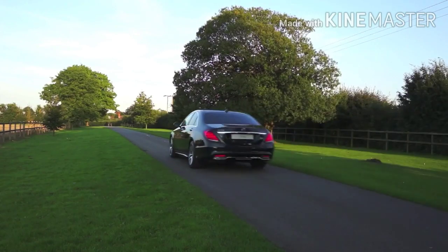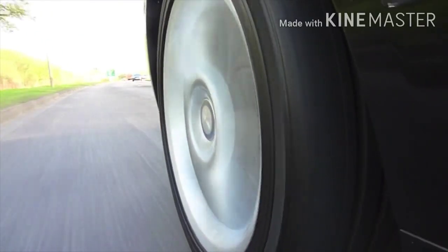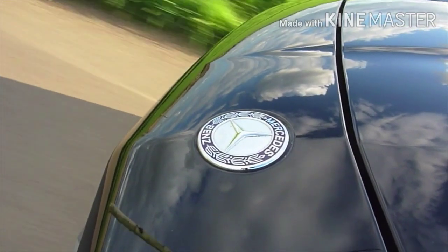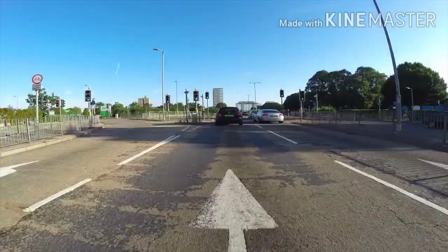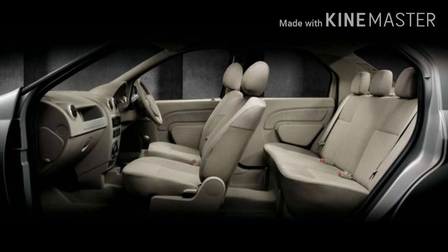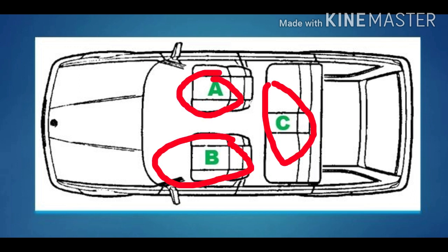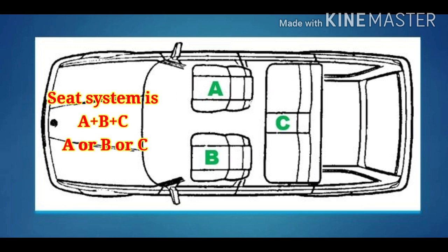Now we are going to see the seating system. A seat system is a single seat having all the components like bolts, nuts, washers, seat belts such as 2-inch or 3-inch, etc. All these parts are included with the seat and shipped to the customer so that the seat system is ready for installation at the customer end. You can see in the image on the screen the seat marked as A, B, and C. Seat system equals A plus B plus C.